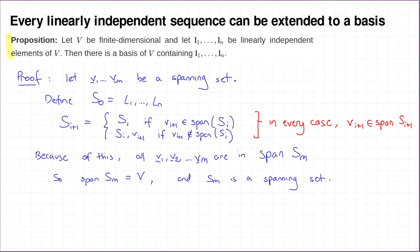That means SM is a spanning set. It's also linearly independent. In fact, every Si for i greater than or equal to 0 is linearly independent. The reason for that is S0 is the sequence L1 up to Ln, which we assumed to be linearly independent. And Si+1, either it's the same as Si, in which case because Si was linearly independent, so is Si+1, or it's Si with a vector not in the span of Si added to the end, which is linearly independent by the extension lemma.